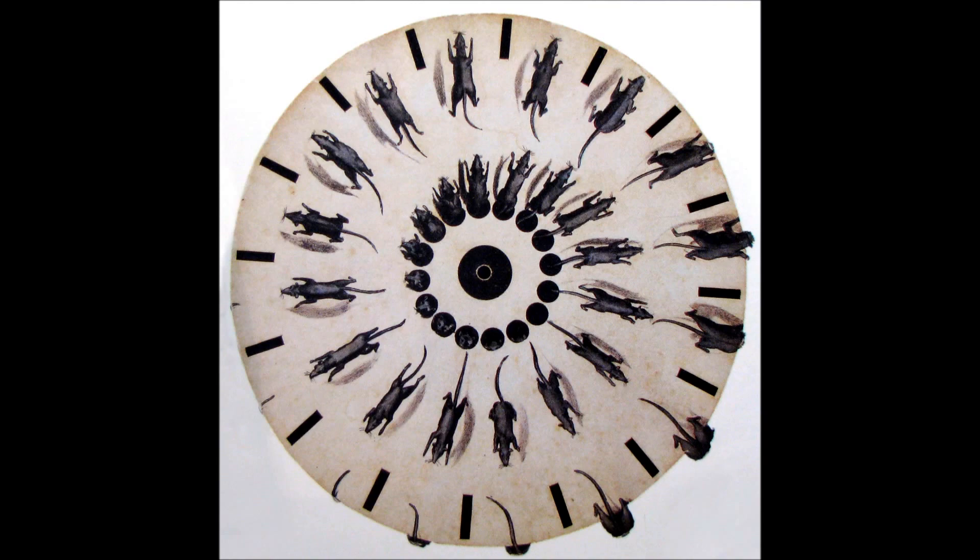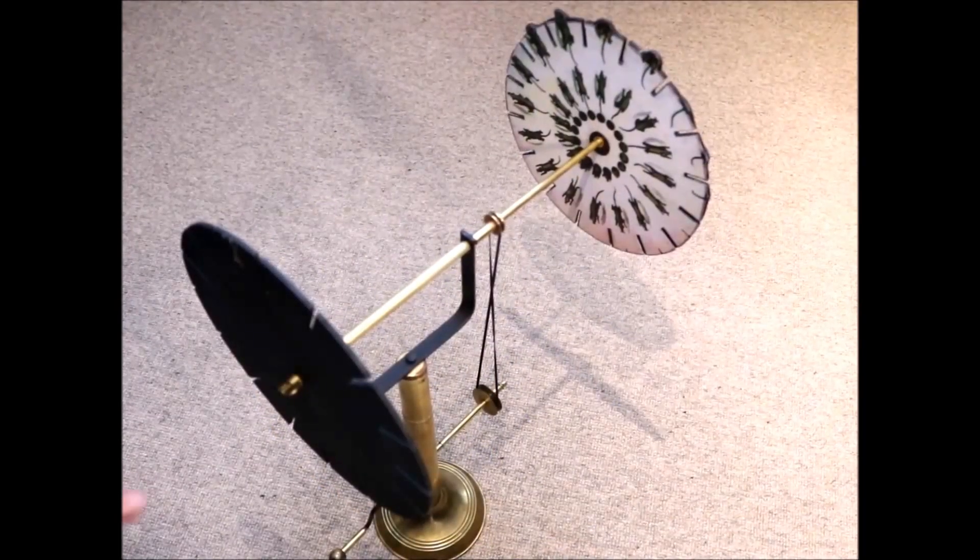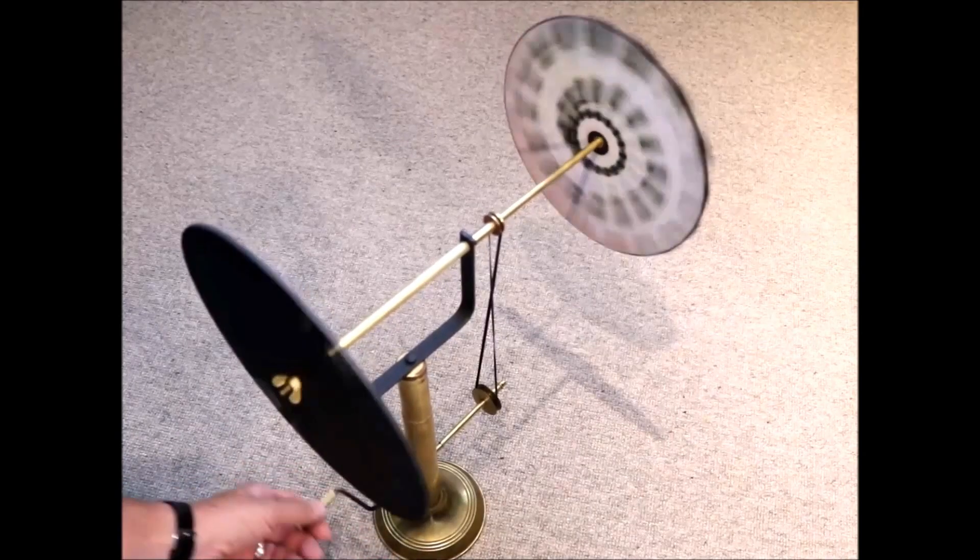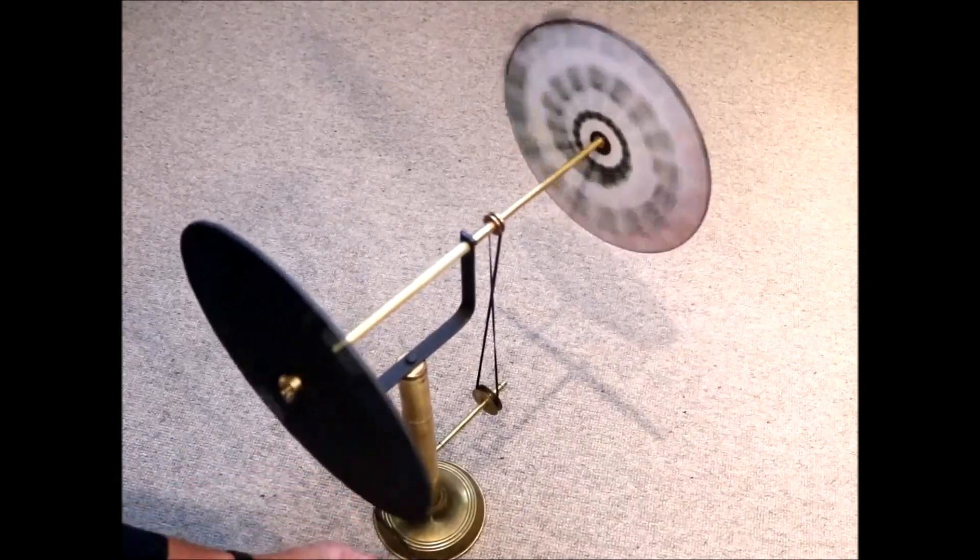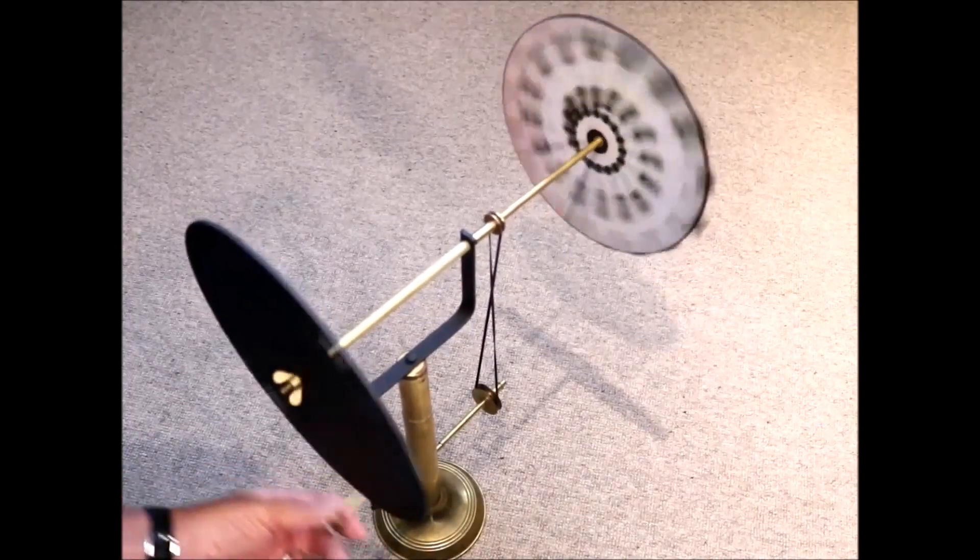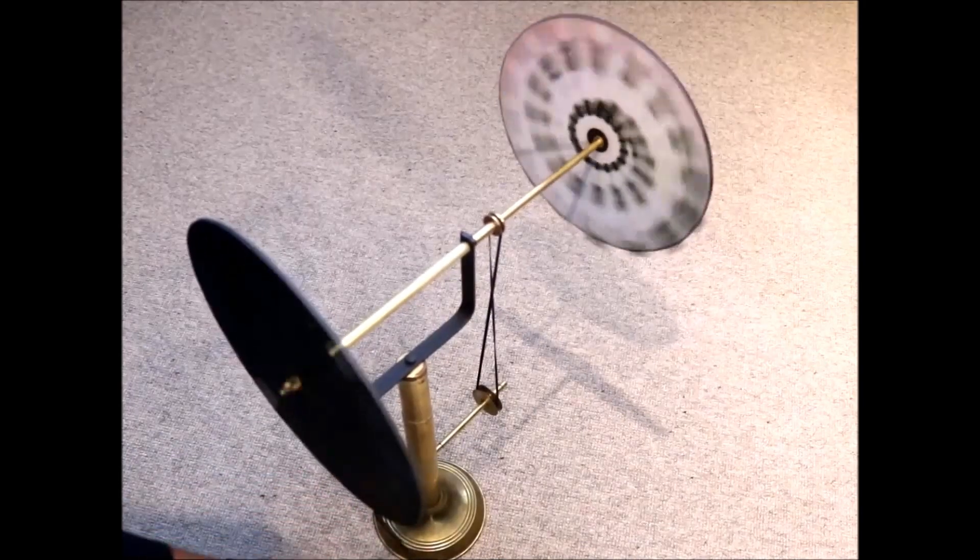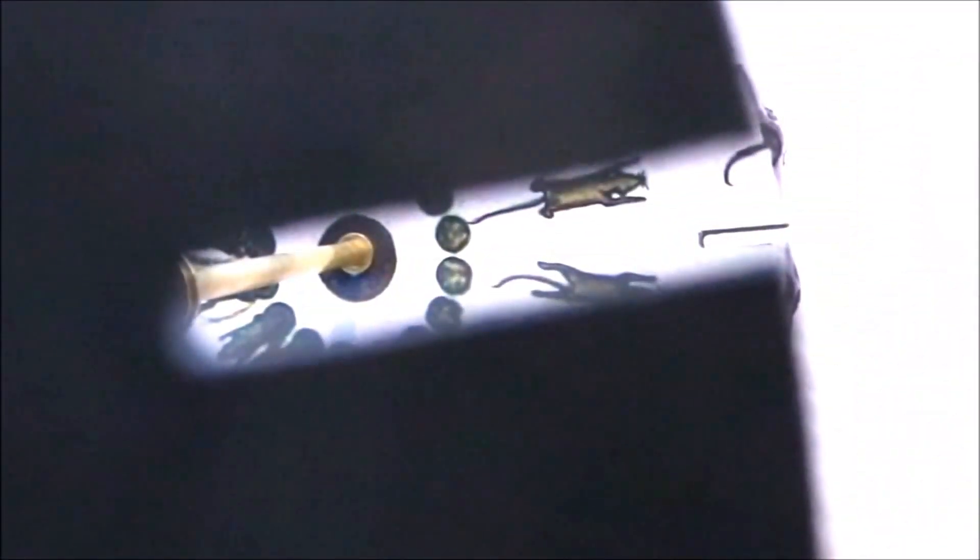As you can see, there are two discs. There's one with slots on the outer rim and you actually have to look through the slots at the other disc which has patterns that move towards the outside of the disc. In the video you will see that when you look through the slots, the mouse not only moves but disappears over the edge of the disc.